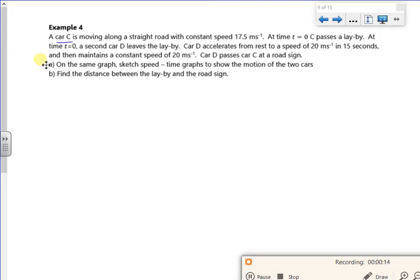So it says car C is moving along a straight road with a constant speed of 17.5 meters per second. At T equals zero it passes a lay-by. Then we've got a second car that accelerates from rest up to 20 meters per second in 15 seconds, and then maintains the constant speed. And car D passes car C at the road sign.